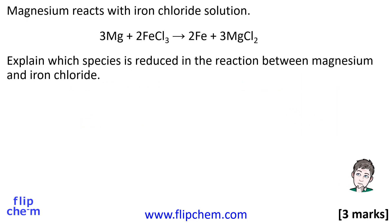Here's the question. Magnesium reacts with iron chloride solution: 3Mg + 2FeCl₃ → 2Fe + 3MgCl₂. Explain which species is reduced in the reaction between magnesium and iron chloride.